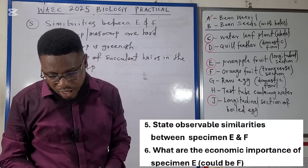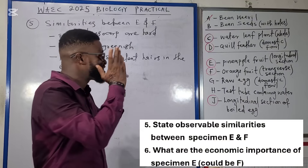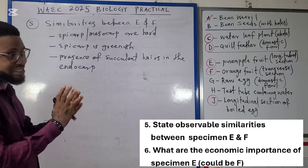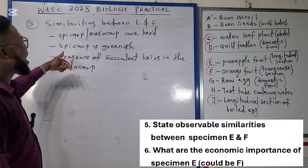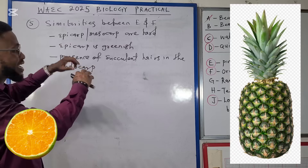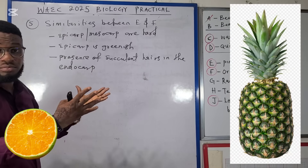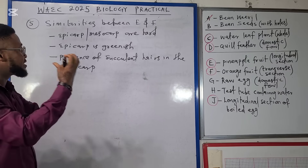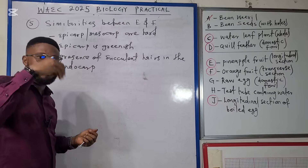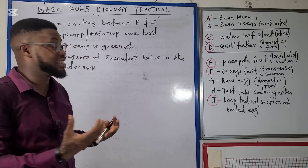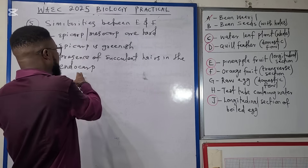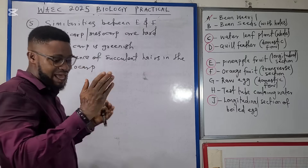Question five asks: what are the observable similarities between specimen E and F? The epicarp and mesocarp for both fruits are fleshy. The epicarp — the outside — is greenish for both pineapple and orange. On the inside, for the longitudinal section of the pineapple, you can see succulent hairs in the endocarp. The same applies to the orange — it is also succulent on the inside.